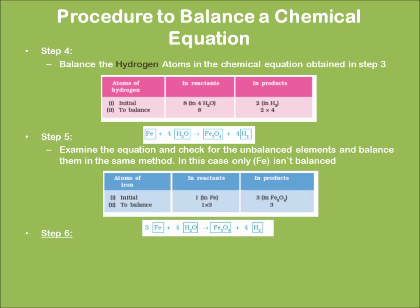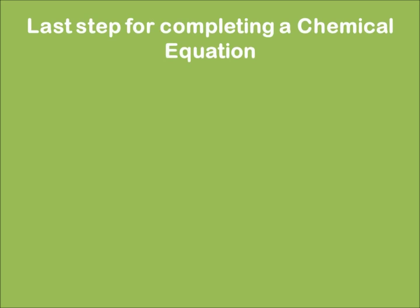Step number six: We have to just write down the finally balanced chemical equation. That's it. Which is nothing but 3Fe plus 4H2O gives rise to Fe3O4 plus 4H2. This is actually one more important last step to complete the procedure of balancing the equation, which is representing the states of the compound.